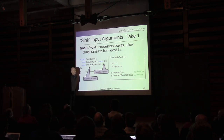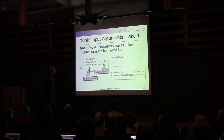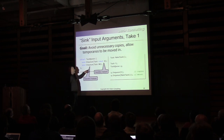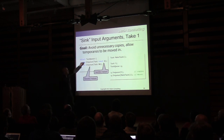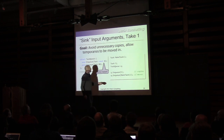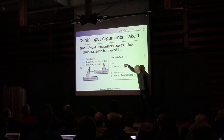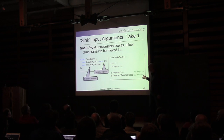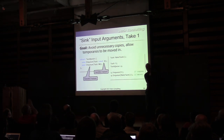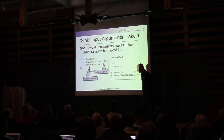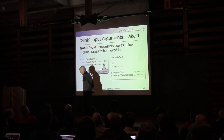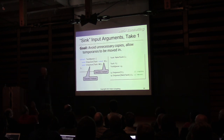For sink arguments, the goal is to avoid making unnecessary copies of your objects by allowing temporaries to be moved in. So you might think about writing enqueue with both an l-value task and an r-value task overload. If you've got a function that makes tasks and a task queue, passing an l-value would call the copy and copy it in, while passing a temporary would move it in. So we don't pay for unnecessary copies and we're moving stuff in — that's pretty great.